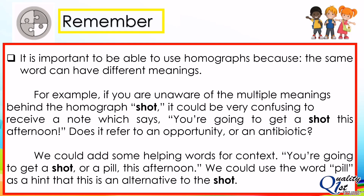It is important to be able to use homographs because the same word can have different meanings. For example, if you are unaware of the multiple meanings behind the homograph shot, it could be very confusing to receive a note which says, 'You're going to get a shot this afternoon.' Does it refer to an opportunity or an antibiotic? We could add some helping words for context — for example, 'You're going to get a shot or a pill this afternoon.' We could use the word pill as a hint that this is referring to the medical meaning of shot.